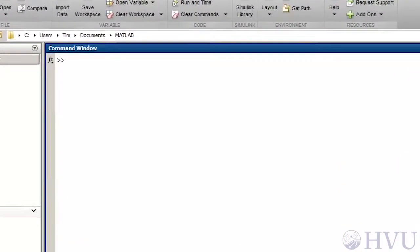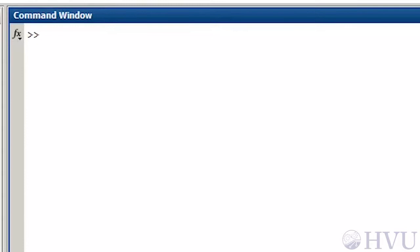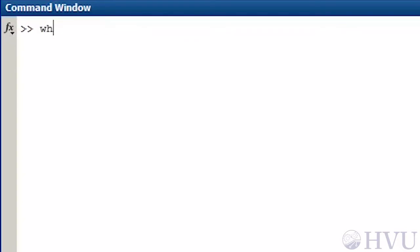First, I'll make sure that there aren't any variables already in the workspace by typing who. Now I'll create a line which consists only of a comment by typing a percent sign. This line doesn't do anything. No variables were created by this line, which I can verify by typing who again.